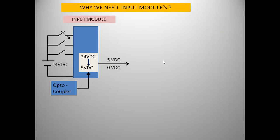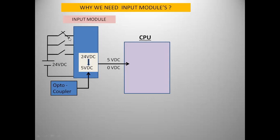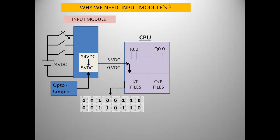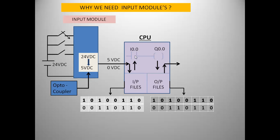This signal goes to the CPU in terms of zero volts or five volts. When the switch is off, zero volt DC goes to the CPU — there is no supply. When the switch is operated, the signal enters the module and is converted to 5 volt DC, which goes to the CPU. The CPU executes the logic and stores the input status in input files in terms of zeros and ones. Once stored, this signal goes to your logic, which then updates the output file in a similar way.